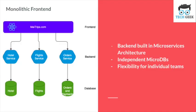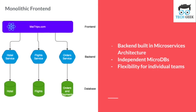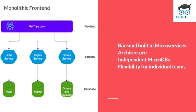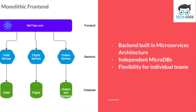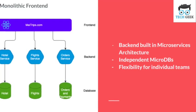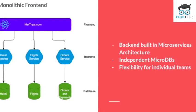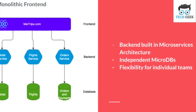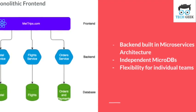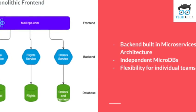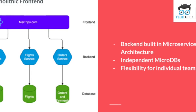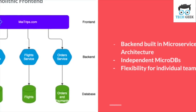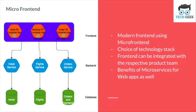Let's start with a simple example of building maytrips.com, which will provide a hotel service, flight booking service, and a service to manage orders and payments — three microservices, each with a respective micro DB. In the current trend, we build a monolithic frontend — be it React.js or Angular — that integrates with these microservices. From an agile teams perspective, each microservice team forms a product team, but the frontend cuts across multiple microservices and creates dependencies.